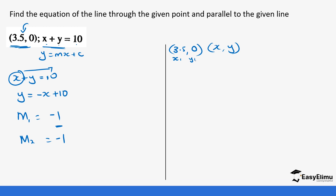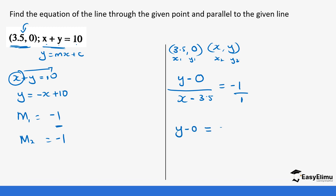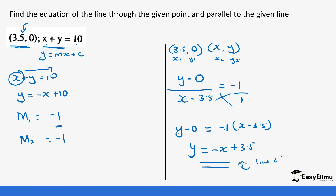In the second equation we have only been given the point (3.5, 0). We introduce another point (x, y), making (3.5, 0) our (x₁, y₁) and (x, y) our (x₂, y₂). Using the gradient formula: (y - 0) / (x - 3.5) = -1. Cross-multiplying: y - 0 = -1(x - 3.5), which gives y = -x + 3.5. This is the equation of the required parallel line.